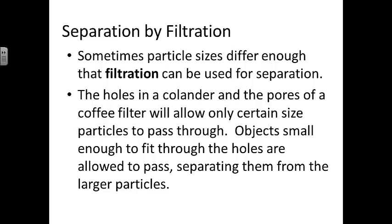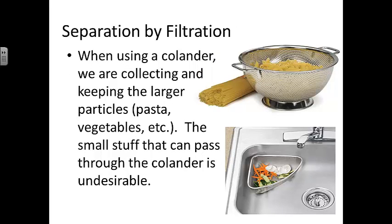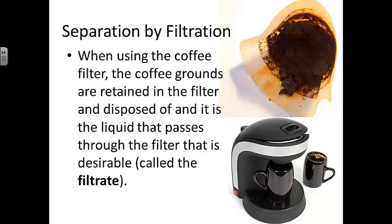Objects small enough to fit through the holes are allowed to pass, separating them from the larger particles which are trapped behind. When using a colander, you're collecting and keeping the larger particles — things like pasta or vegetables — while the small stuff that passes through is the undesirable part. When you use a coffee filter, the coffee grounds are retained in the filter and disposed of; it's the liquid that passes through that you want to keep. That liquid is called the filtrate.